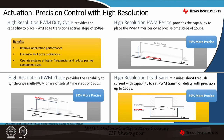The high-resolution PWM module enables improved application performance, eliminates limit cycle oscillations, operates the system at very high frequency, and reduces passive component sizes. It has the capability to place the PWM edge transition at a time step as small as 150 picoseconds. This use case typically applies to PWM duty cycle, PWM period, PWM phase in multi-phase operation, or dead band — ultimately minimizing shoot-through. This resolution is provided down to 150 picoseconds.